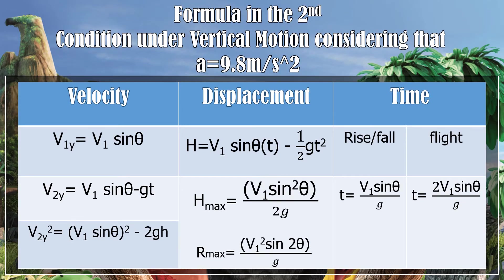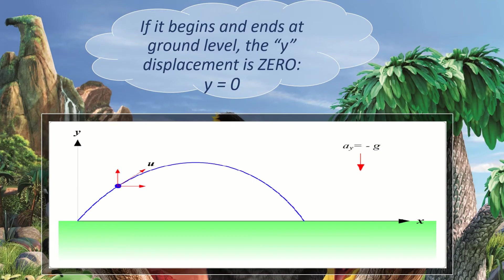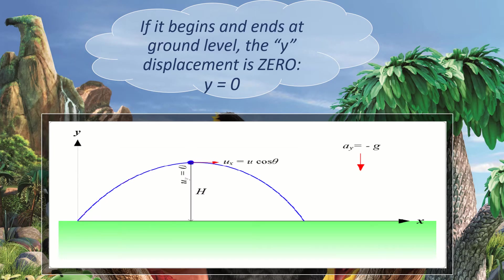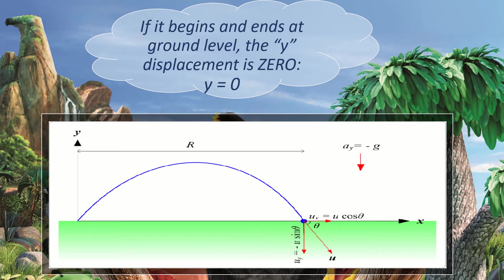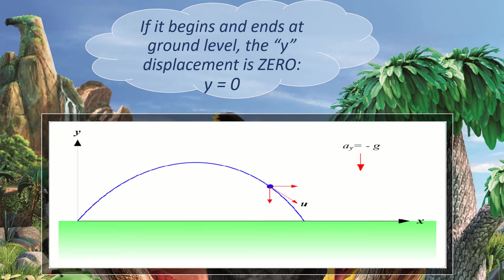We have the formulas for velocity, displacement, and time in the second condition under vertical motion, considering acceleration equal to 9.8 meters per second squared. There are several things to consider when doing these types of projectiles. If the projectile begins and ends at ground level, the y displacement is always 0.